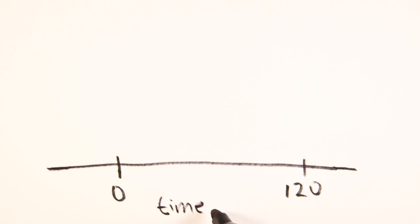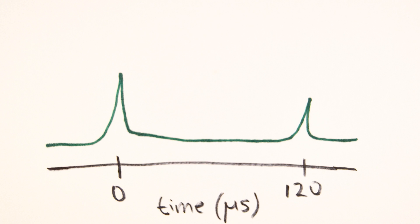We can work this out by using an oscilloscope trace. Take this one for example, showing the waves being rebounded from a crack in a piece of aluminum. There are 120 microseconds between the generated pulse and the reflected pulse.